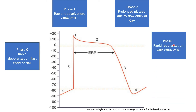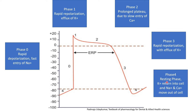In phase three, rapid repolarization occurs with the efflux of potassium. The potassium channel opens for a prolonged period, and the maximum amount of potassium moves out of the membrane. Due to this removal of positive ions, the membrane starts declining toward the negative side. In phase four, the resting phase, potassium returns into the cell while sodium and calcium move out, causing the membrane to return to the resting state of minus 90 millivolts.